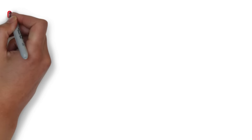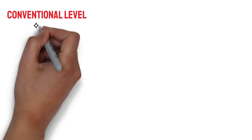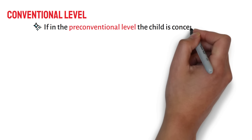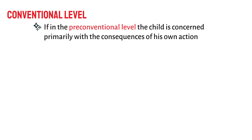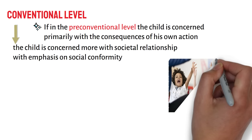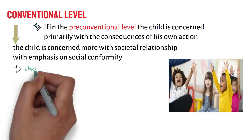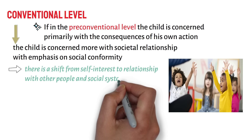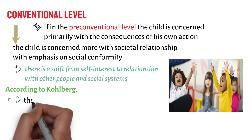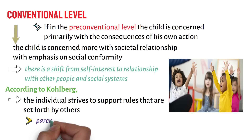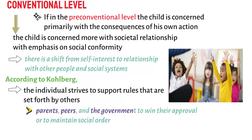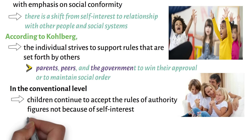In the conventional level, the child is concerned more with societal relationships with emphasis on social conformity. There is a shift from self-interest to relationship with other people and social systems. Here, according to Kohlberg, the individual strives to support rules set forth by others, such as parents, peers, and the government, to win their approval or to maintain social order. Children continue to accept the rules of authority figures not because of self-interest, but because they believe that behaving according to said rules will ensure positive relationships and societal order.